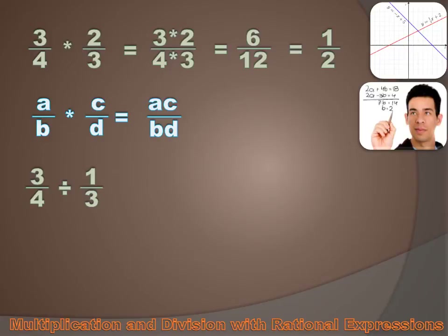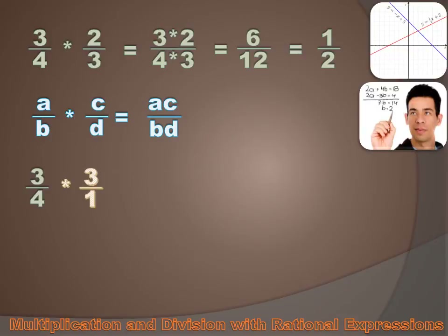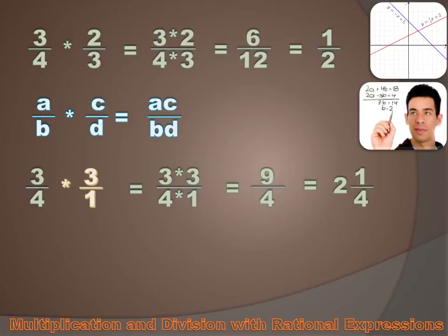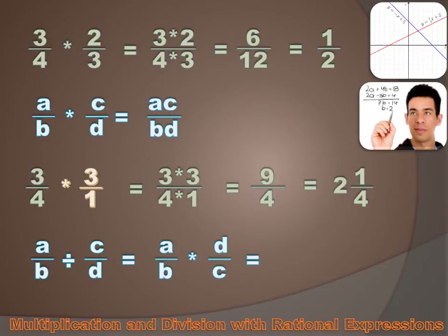Division is a little trickier, but not that tricky. You have to remember the multiplicative inverse — if I'm dividing by one third, that's the same thing as multiplying by three over one, or three. I can get rid of my one third and substitute three over one, then multiply to get nine over four, or two and one quarter. Same is true when using algebraic symbols: a over b divided by c over d equals a over b times d over c, which equals a times d over b times c.